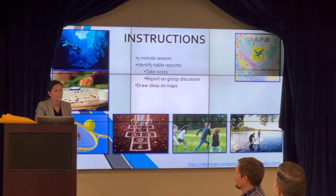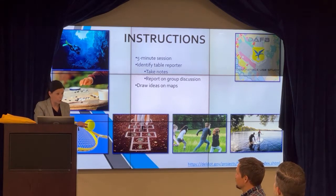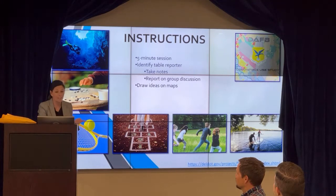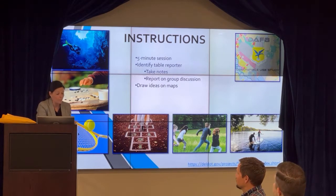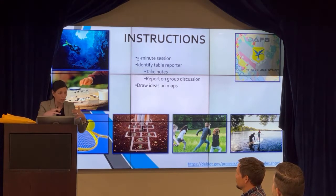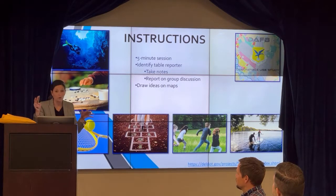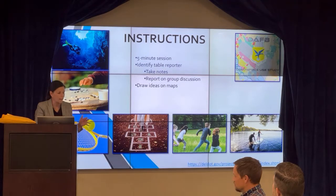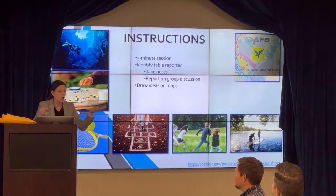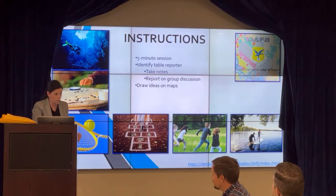I need each table to identify a recorder. This would be someone who is not one of the moderators, who will take notes of what's discussed at each table. Then when we come back together — at the end of ten minutes after our discussions — each recorder will tell the whole room a summary, one to two minutes, of what was talked about at your table, so that we all know what each other is discussing. It helps with transparency.